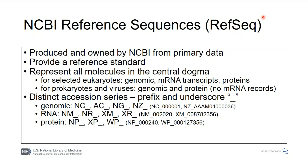A couple of points about our reference sequences: these are sequences that we produce and own. We don't perform experiments; we take sequences submitted to the INSDC, merge them into larger sequences, edit them somewhat, and provide our own annotation as a reference standard. They have distinct identifiers with an underscore and two-letter prefix — for example, genomic sequences have 'NC_' — so you can recognize the kind of sequence by that prefix.